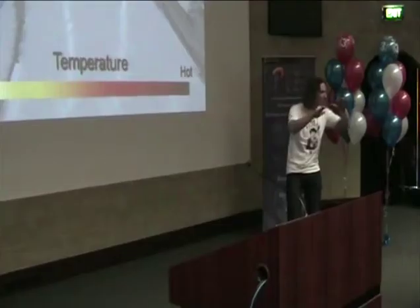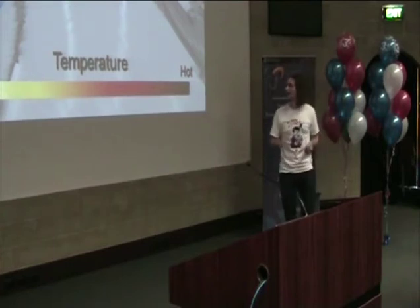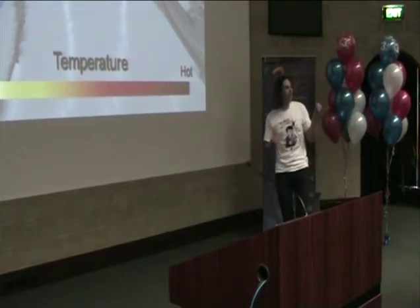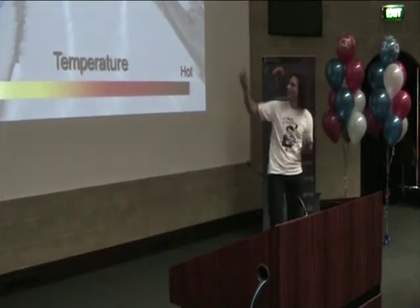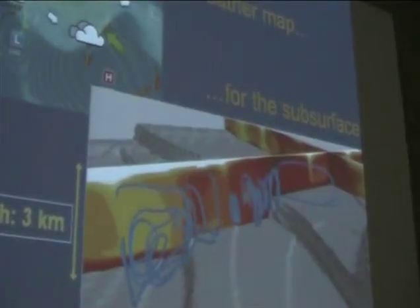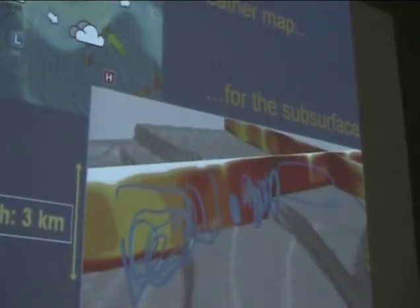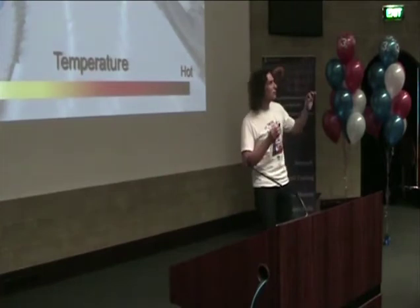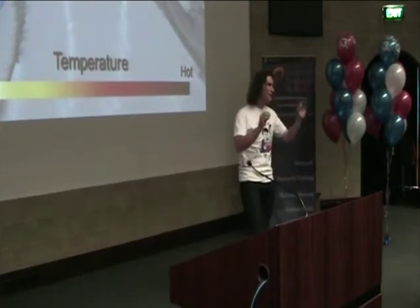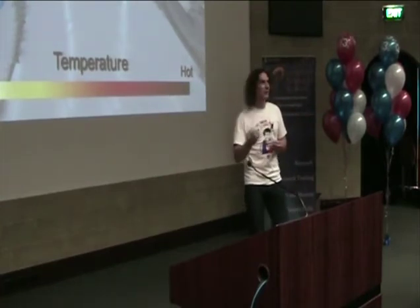We know that generally temperature is increasing when we get deeper into the Earth. But locally, fluid flow — which is indicated here by these wiggly blue lines — has got a strong influence on the temperature pattern. And this fluid flow is again strongly controlled by the structural setting.